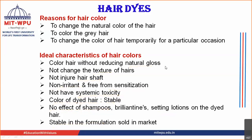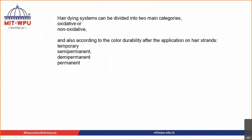Now let us move further to the types of hair dye. Basically the hair dyes are divided into two parts: you have oxidative hair dyes and you have non-oxidative hair dyes. Oxidative hair dyes are the hair dyes whereby oxidation reaction is taking place and the color formation — that dye is applied to your hair. Those are oxidative hair dyes, basically the permanent hair dyes — they fall under this category.